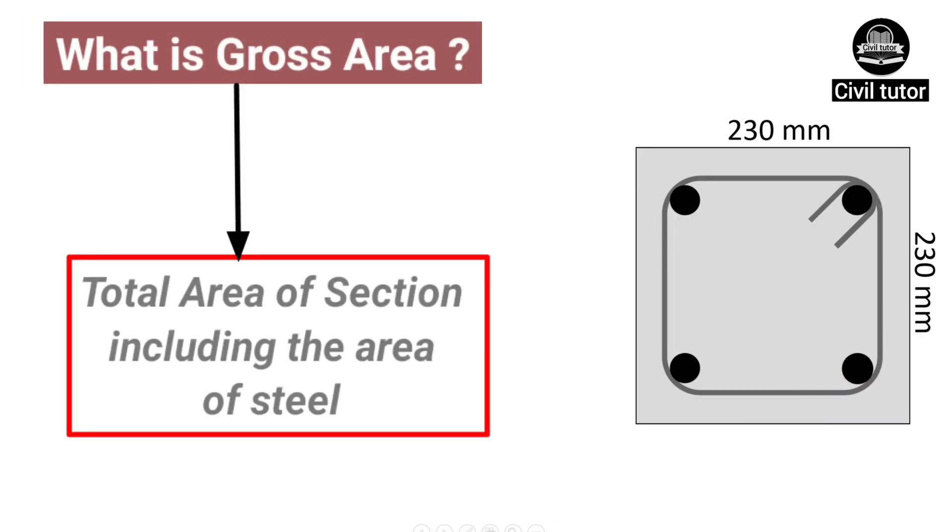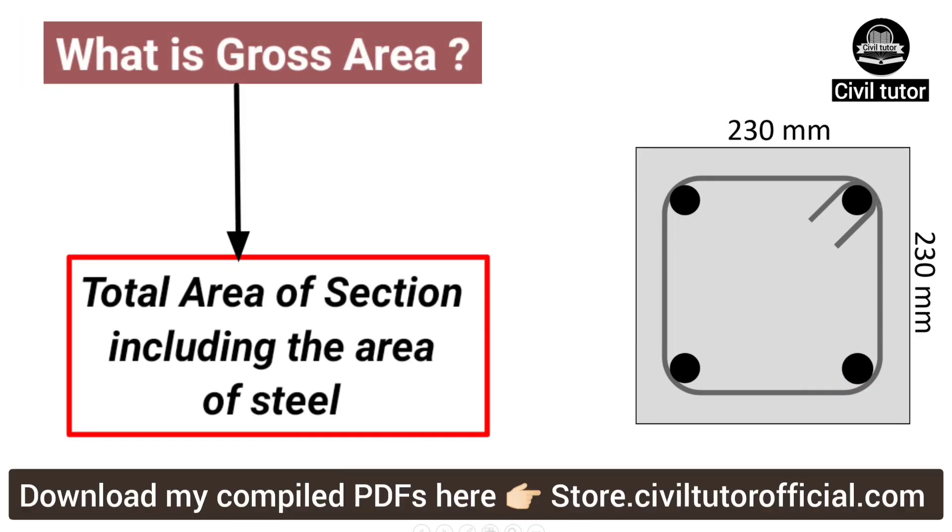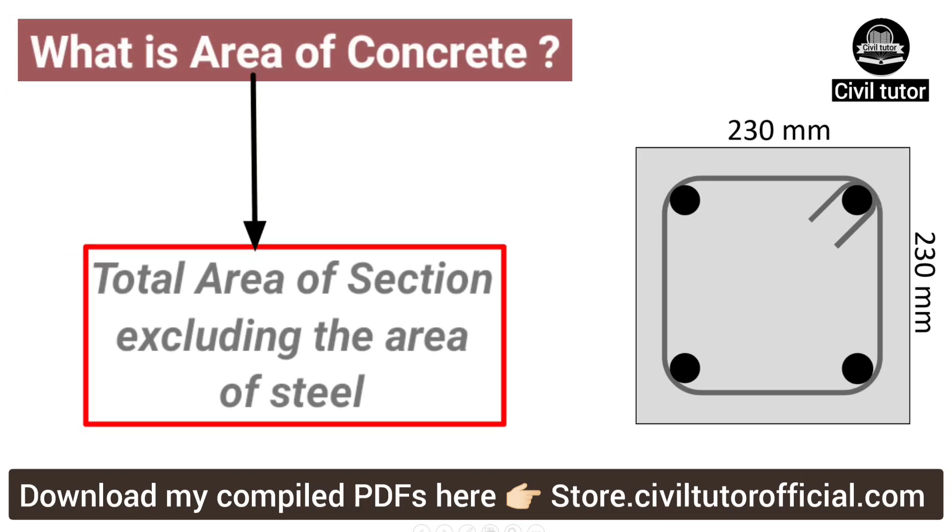The gross area is the total area of this section including the area of steel and the area of concrete is the area of this section excluding the area of steel.